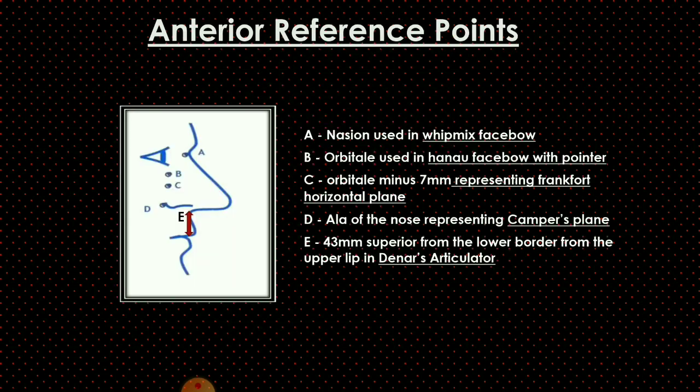There are various anterior reference points used with different face bows. Nasion is used as the anterior reference point for the Whip Mix face bow. The orbital point is used as an anterior reference point for the Hanau face bow; orbital minus 7 mm represents the Frankfort horizontal plane. The ala of the nose represents the Camper's plane, and 43 mm superior to the upper lip's lower border is the landmark used in the Denar articulator.